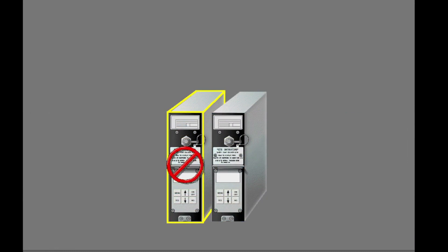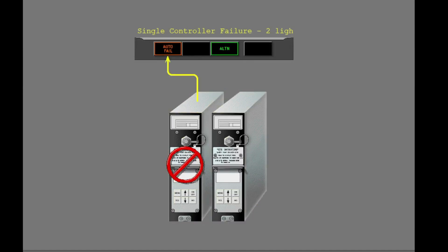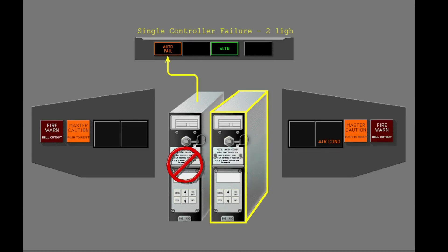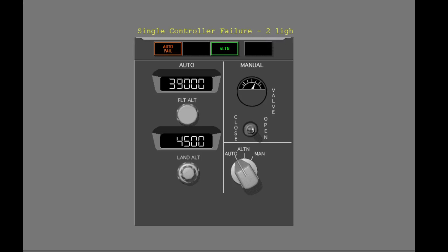If the pressure controllers fail, lights illuminate to indicate the failure. If the primary pressure controller fails, the auto-fail and alternate lights illuminate. Also, the master caution light and the air conditioning enunciator light illuminate. Press the master caution light now to extinguish the warning lights. The green alternate light shows that the alternate pressure controller now controls the pressurization system. The auto-fail light shows that the primary controller has failed. To extinguish the auto-fail light, select alternate on the mode selector now.